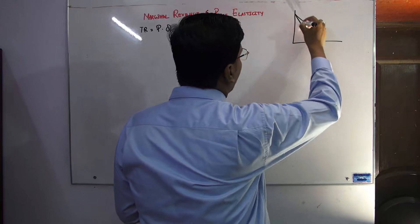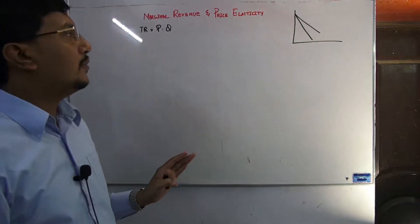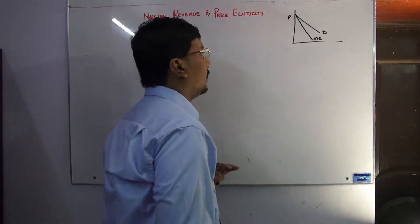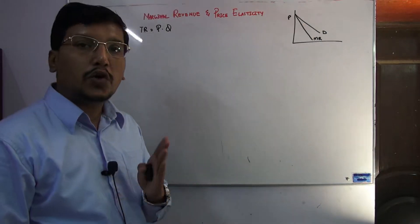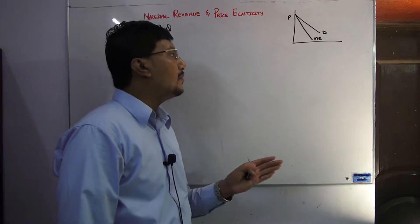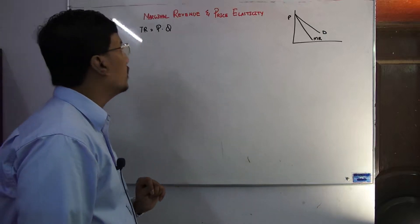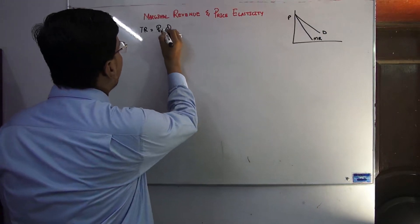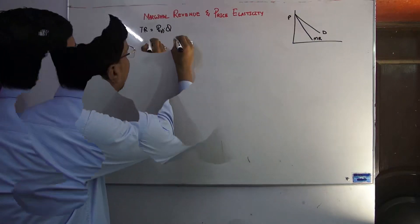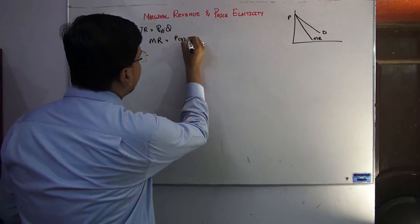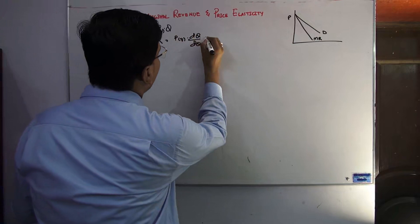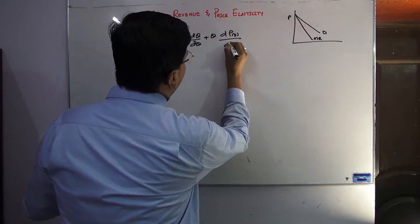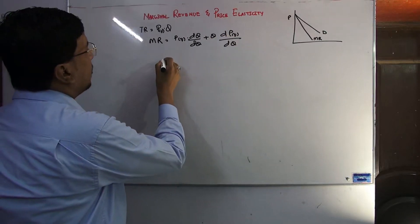We have seen that the demand curve is negatively sloped and the marginal revenue curve has been reduced. We have also seen the formula — marginal revenue is equal to price. Now, since P is a function with respect to Q, we apply the multiplicative (product) rule.